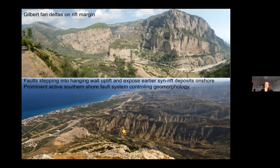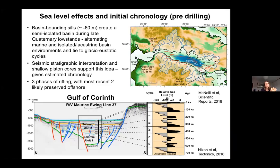We have some wonderful Gilbert fan deltas on the rift margin. These were formerly submarine but are now being uplifted in the footwall of active faults as those have stepped north, so we're seeing some of the earlier syn-rift deposits exposed on shore. We also have a prominent active southern shore fault system really controlling the geomorphology. There are strong sea level effects here and we can use those to generate an initial chronology. The basin is surrounded by sills that are basically isolating the basin during lowstands, giving us an alternating marine and lacustrine basin environment as sea level fluctuates, which we've verified from shallow piston cores and seismic stratigraphy.